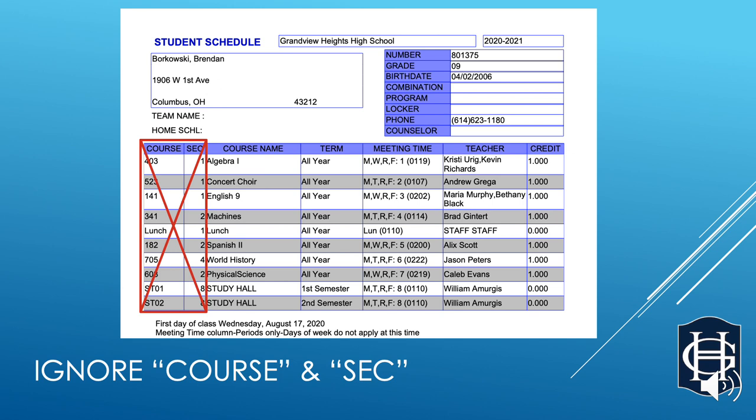First of all, if your schedule has a column listed as Course and a column listed as SEC, short for Section, these are just the codes that correspond to your classes. Just ignore these columns. Oftentimes, students confuse that SEC column for the period. Again, just ignore that.